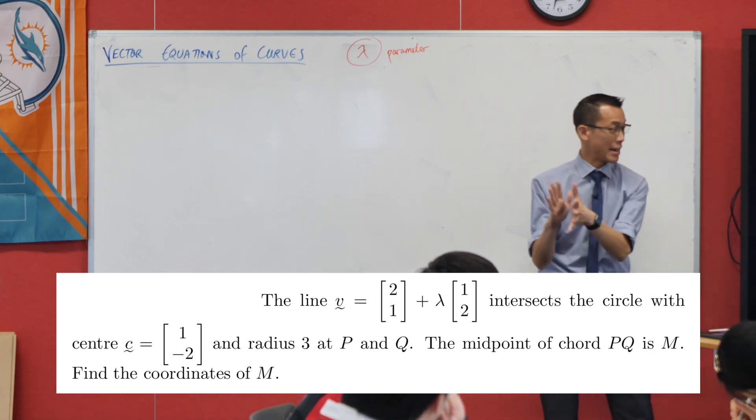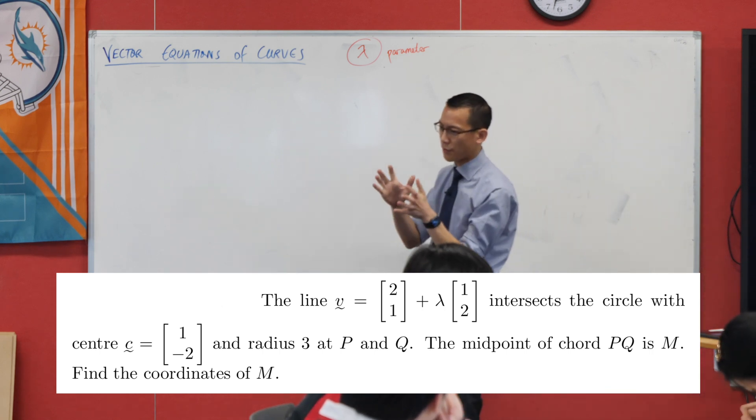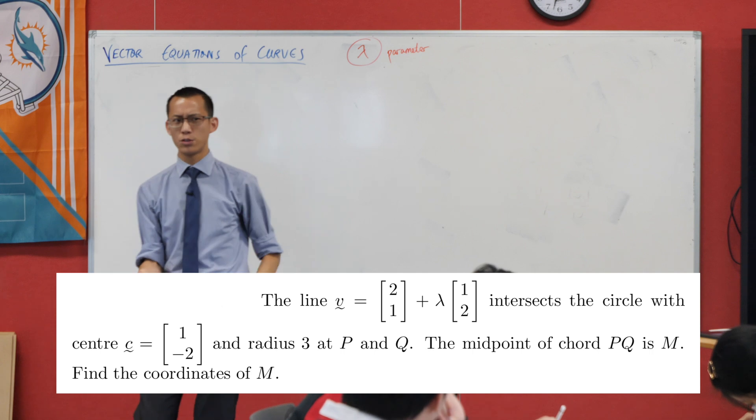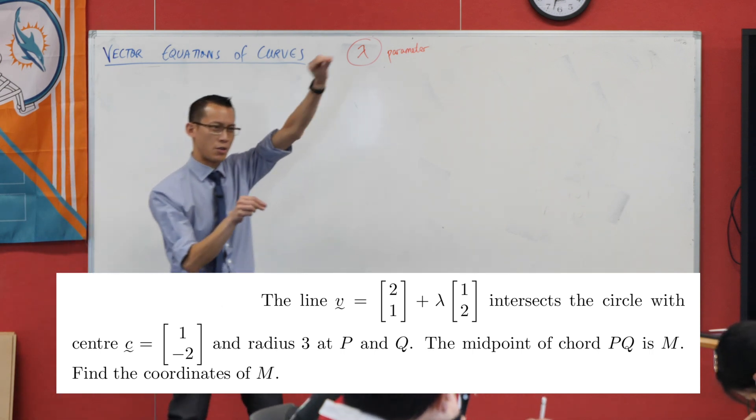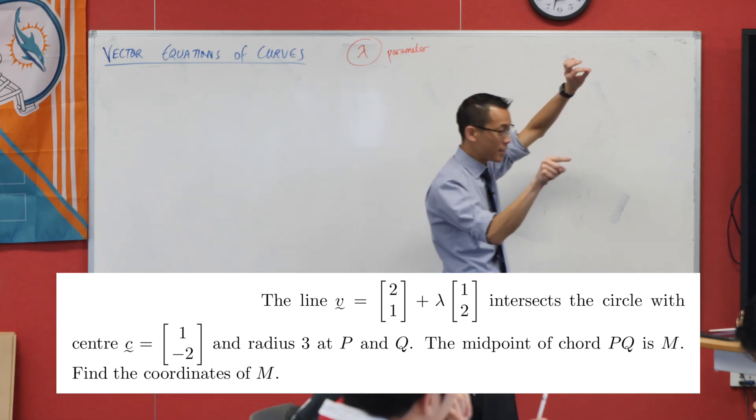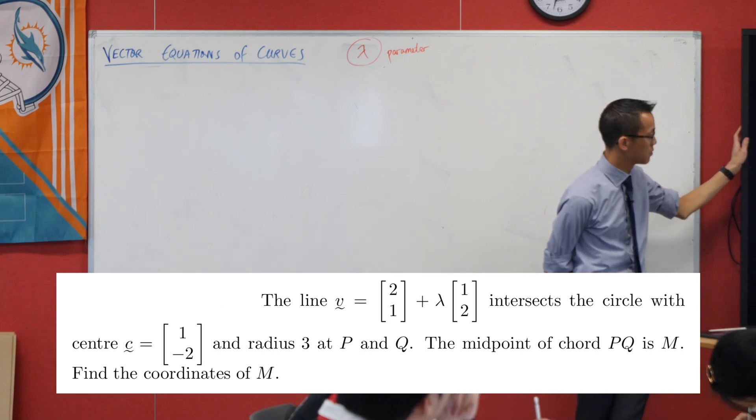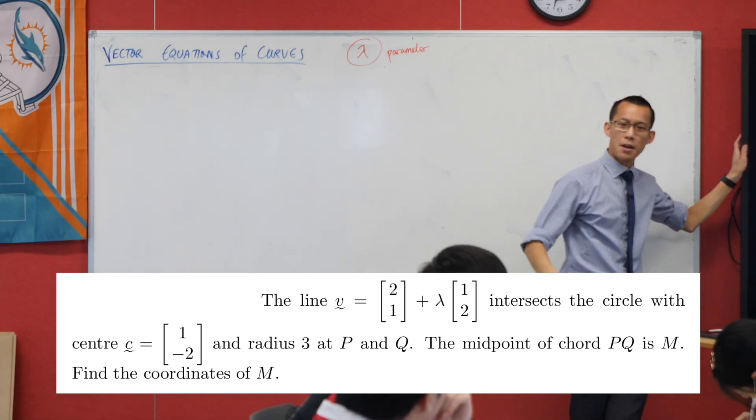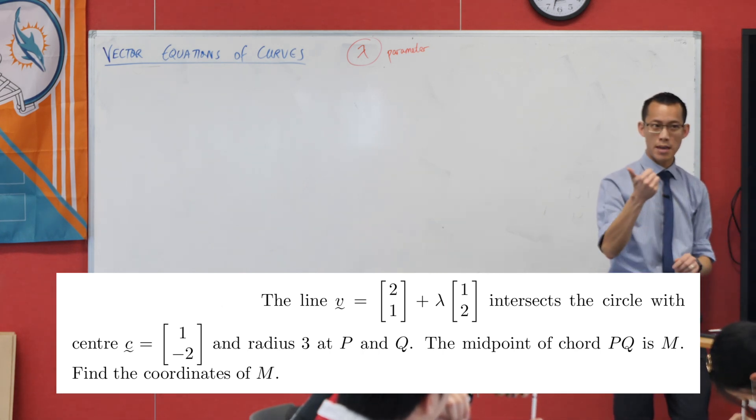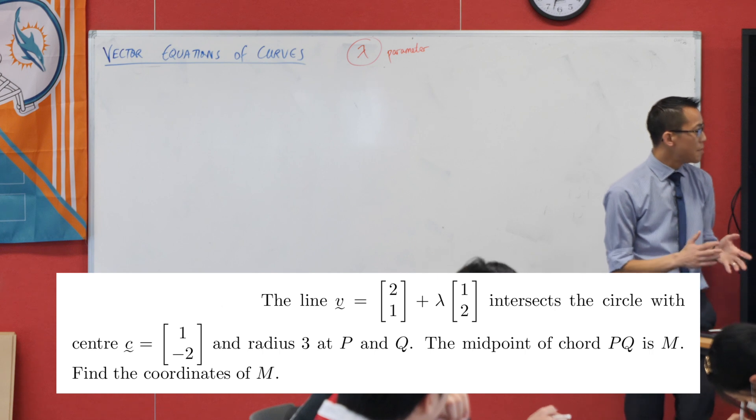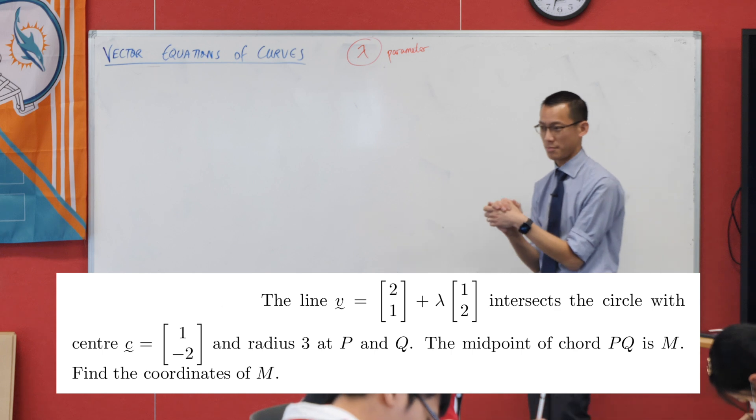Okay, so we've got a straight line, great. It intersects the circle with center and then they provide you, this is a bit funny, they provide you a vector that tells you where the center is, vector which we sort of normally associate with lines, but really it's the point at the end, it's the head, as it were, of the vector that tells us where the center of the circle is. Radius three, and then apparently this line and this circle intersect twice, P and Q. The midpoint of that chord PQ is M, find the coordinates of M. There's the question, okay.